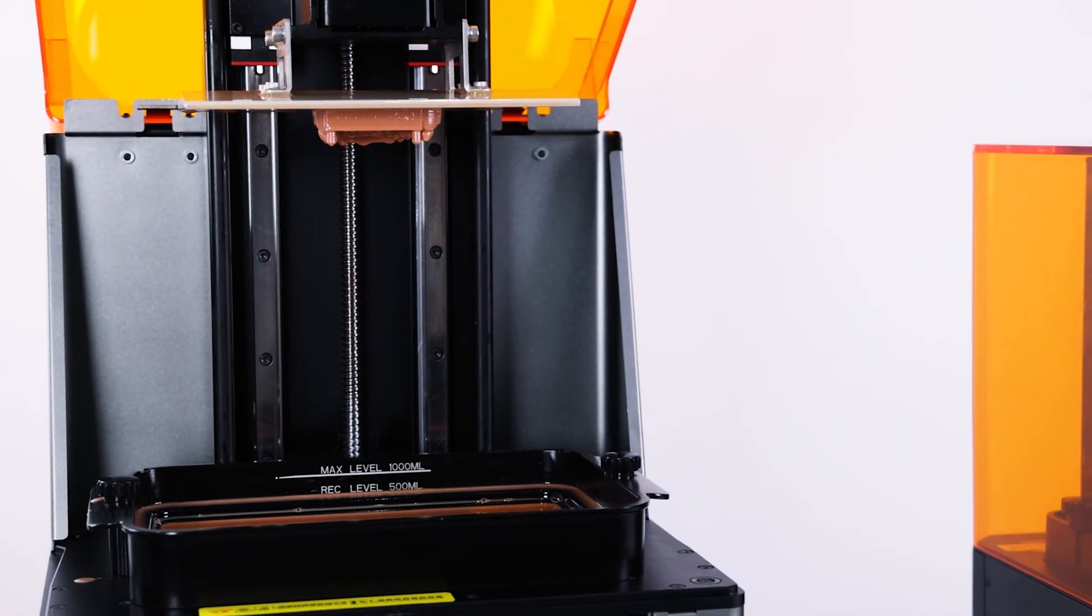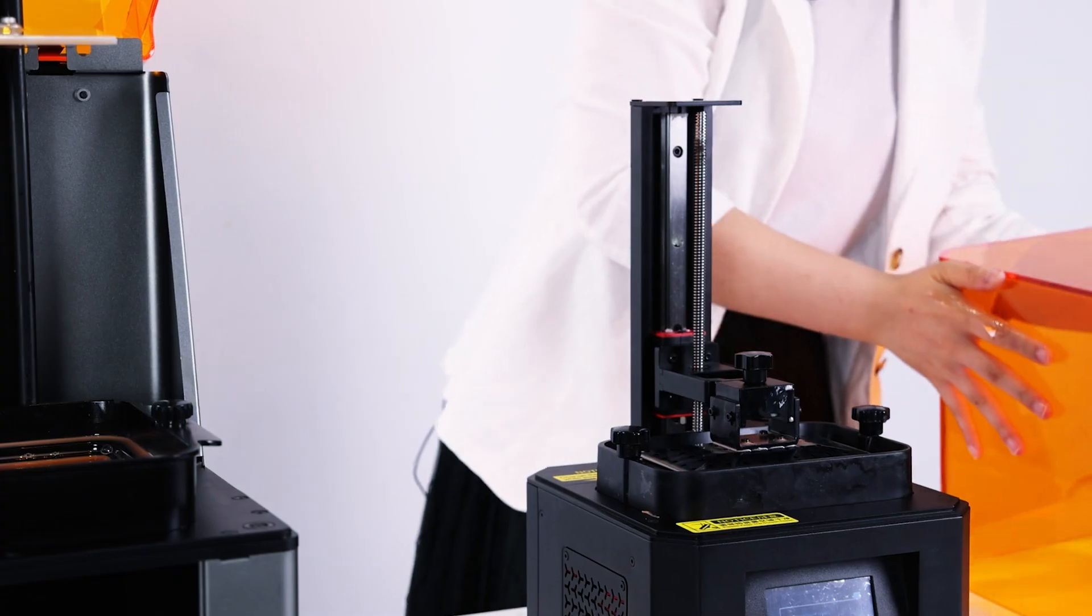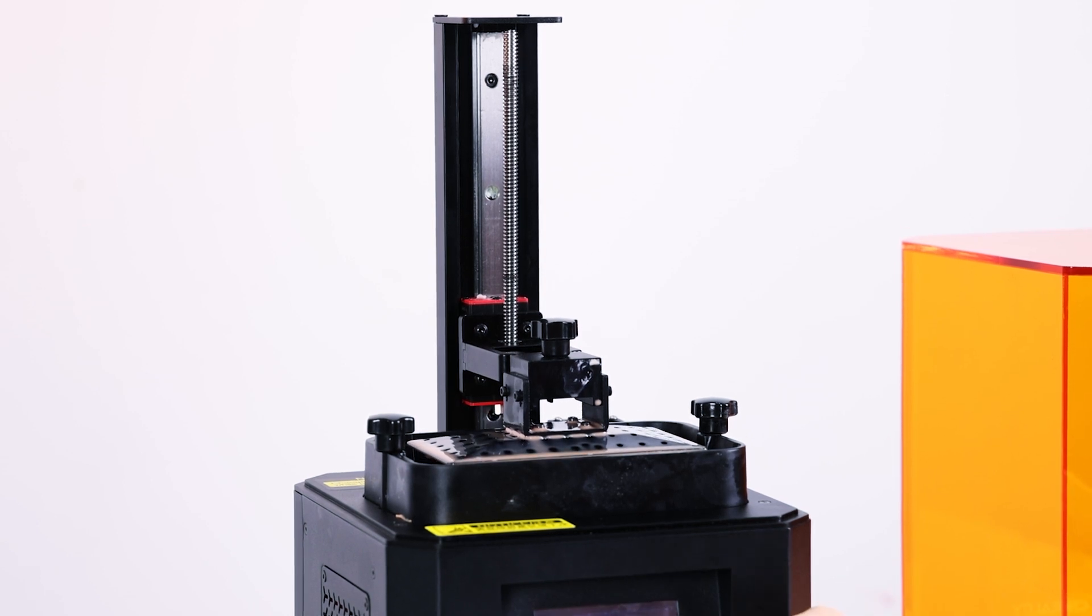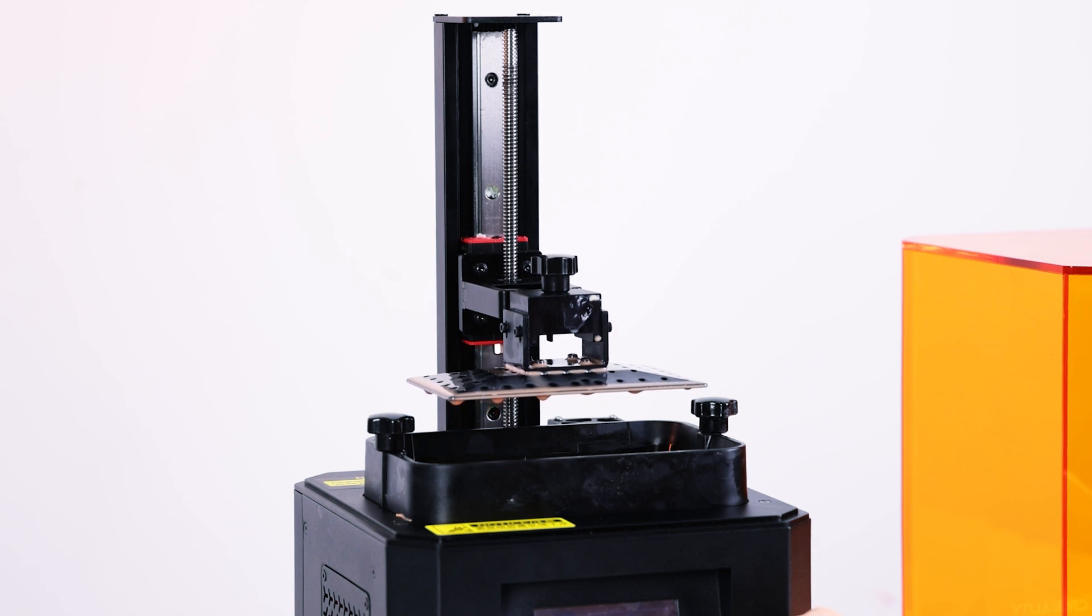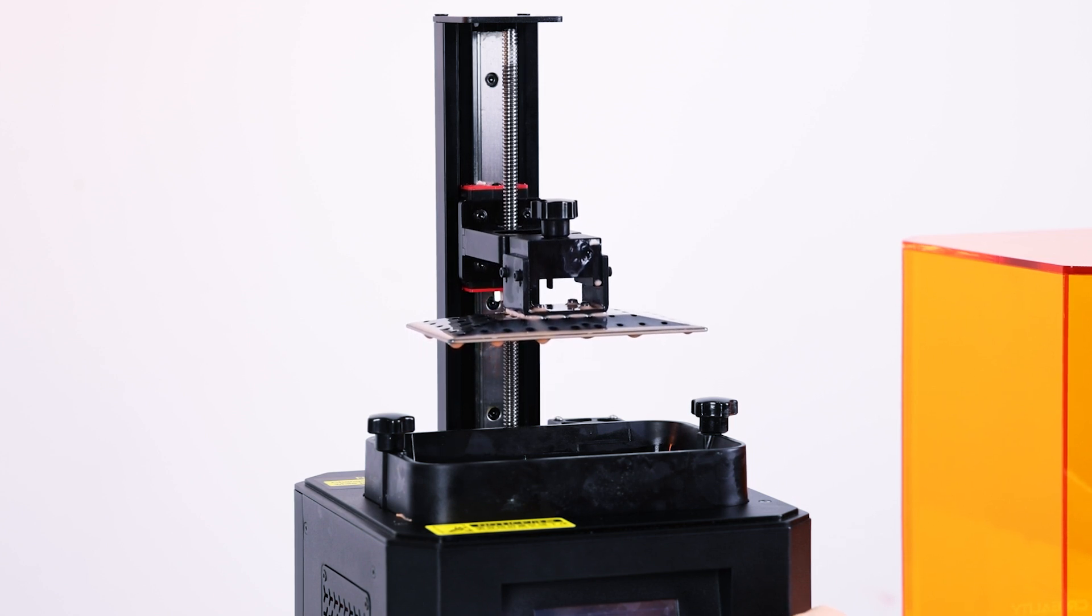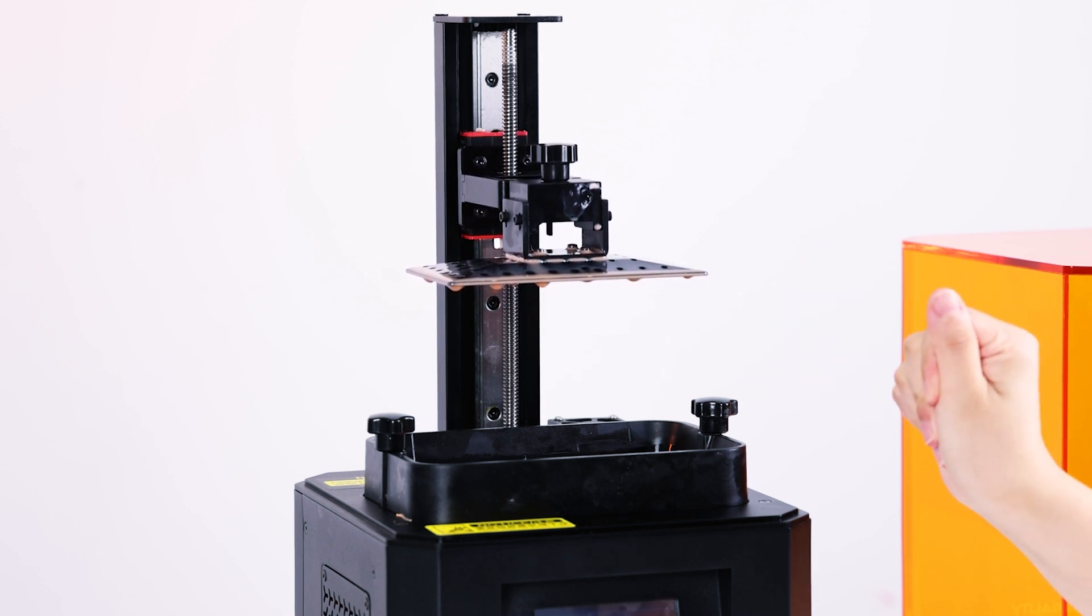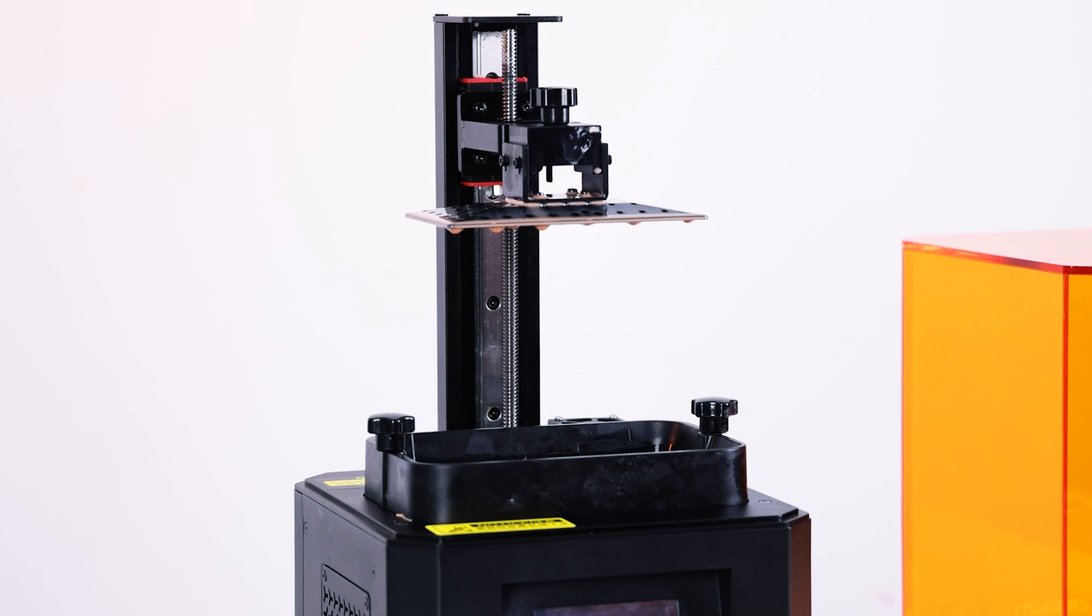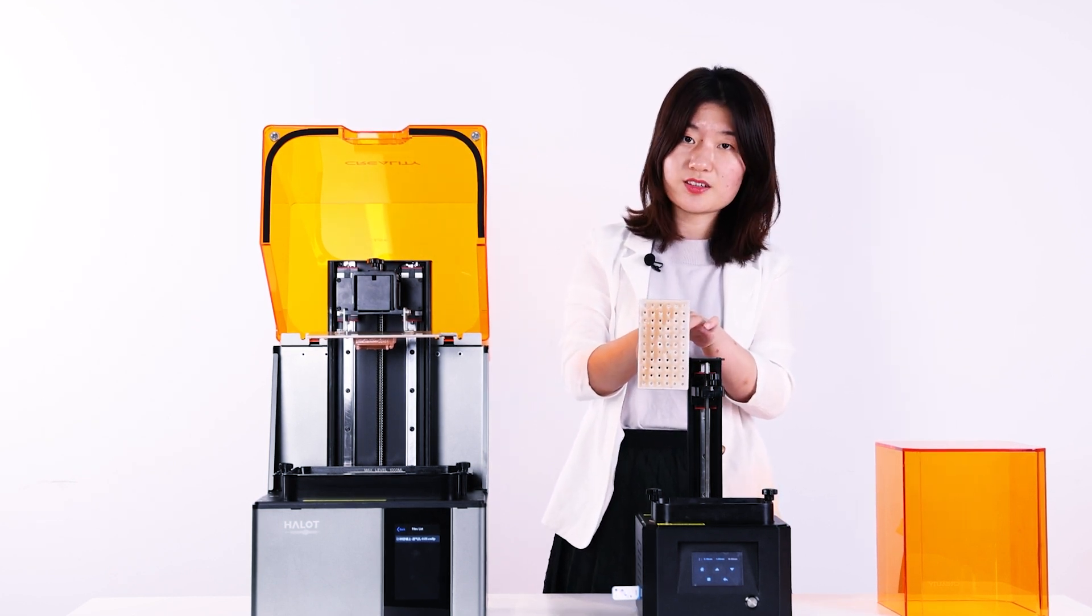And let's check the traditional one. Let's check the result of this traditional printer. Let's adjust the Z axis. We can see the printing platform is totally empty. It proves that this time, it proves that the printing this time is failed. Let's also take off this platform. Wow. You can see that. It's really empty.